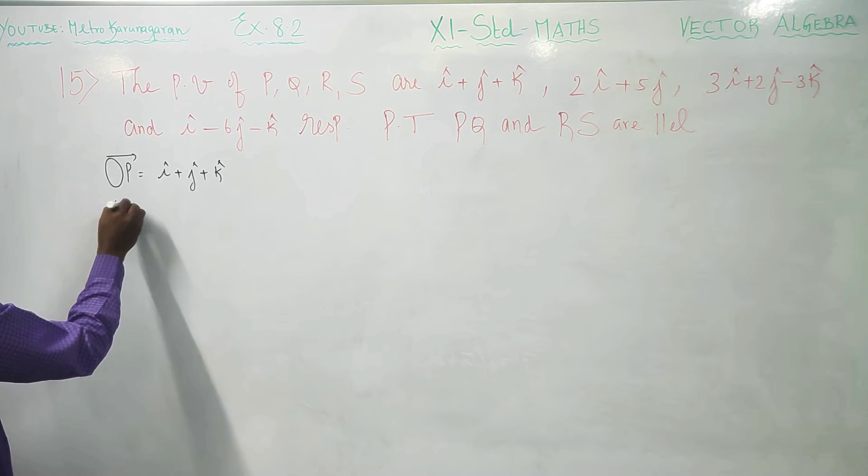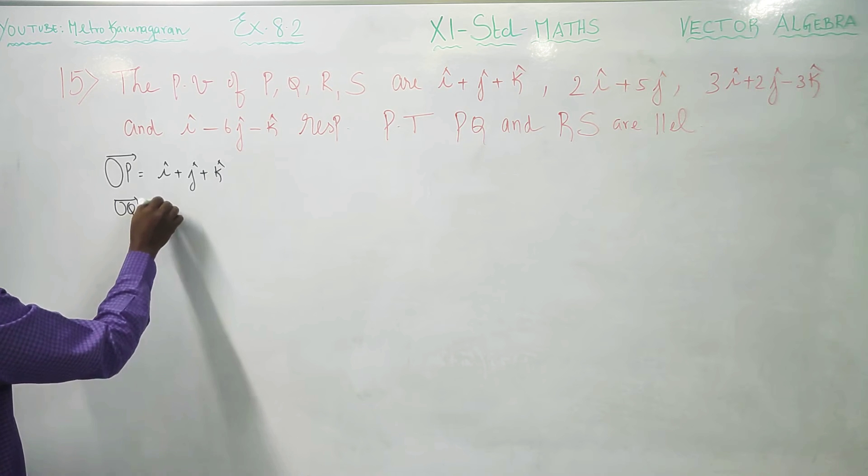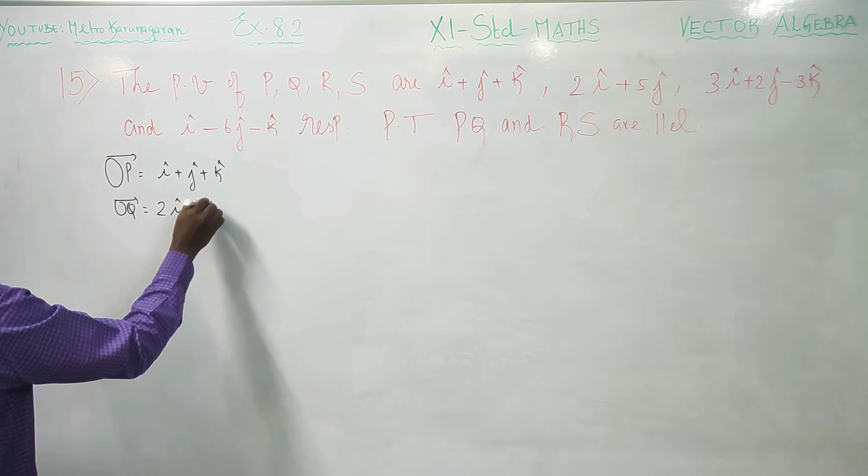After this, OQ, OQ vector is equal to second vector that is 2I plus 5J.